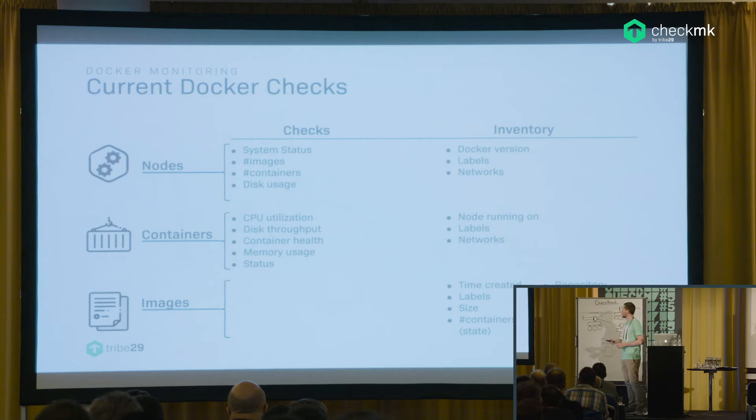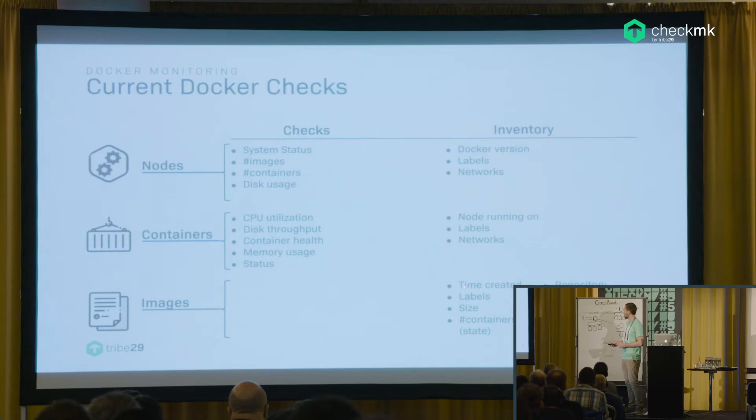Currently in CheckMK for Docker monitoring, we have two plugins in version 1.5: the MK Docker node plugin, which monitors node information, and the Docker container piggyback, which gets information by working on the command line and getting JSON output. Host services are then generated. We have different nodes, containers, and images, with different checks and inventory data. For example: system status of nodes, number of images and containers, disk usage, CPU utilization, memory usage and status, and also a full range of inventory data such as image creation time, size, and how many containers are using them.